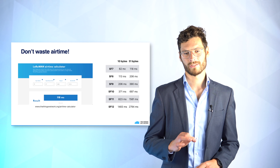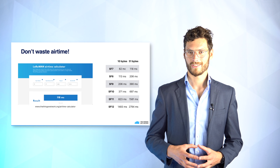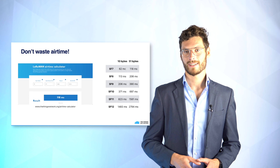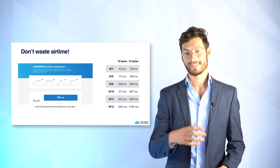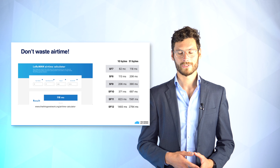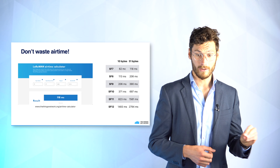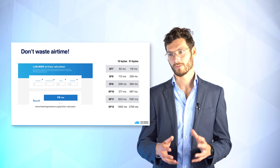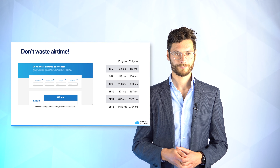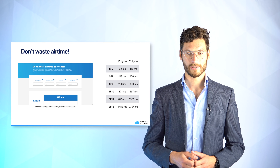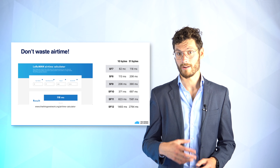Always try to use the highest data rate possible because we don't want to waste airtime. If all devices send at the lowest data rate, the air becomes cluttered with LoRaWAN messages. For example, a 10-byte message using SF7 takes about 60 milliseconds to send, but the same message using spreading factor 12 takes about one and a half seconds — consuming far more resources and energy. Always go for the lowest spreading factor and highest data rate. There's an airtime calculator tool online where you can experiment with different spreading factors.